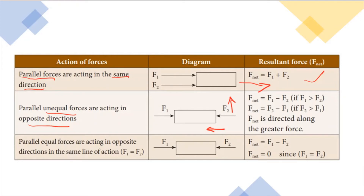Now let us consider one special case of unlike parallel forces where the forces are equal in magnitude — that is, F1 equals F2. These equal forces act in opposite directions along the same line of action. F1 cancels F2, so F1 minus F2 equals zero. This is a special case where the resultant is zero.